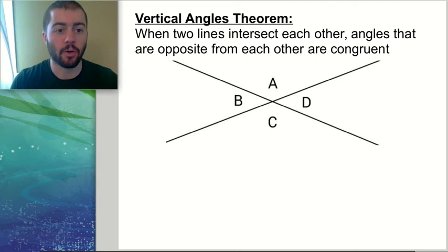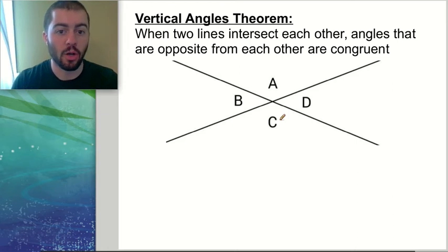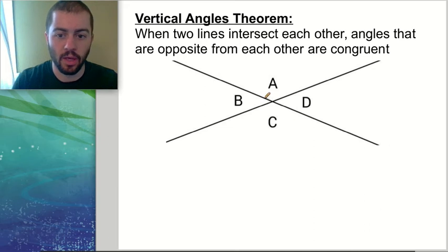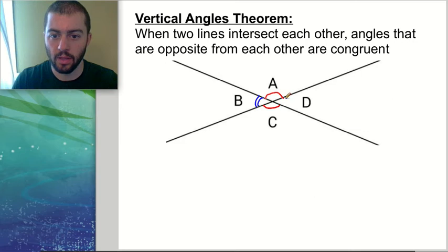In this video we're going to go over a proof of the vertical angles theorem. What the vertical angles theorem tells us is that when we have two intersecting lines, angles that are formed across from each other or opposite each other are congruent. So in this case that would mean angle A is congruent to angle C, and by the same token angle B is congruent to angle D.